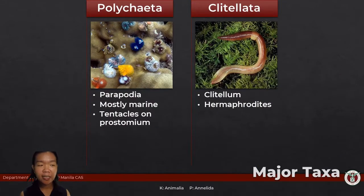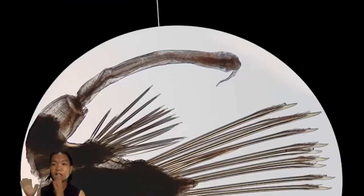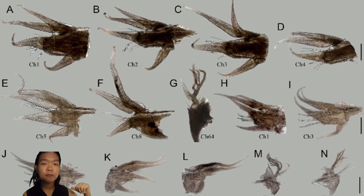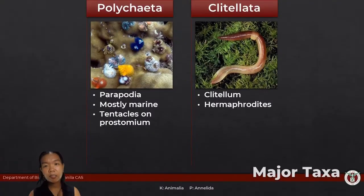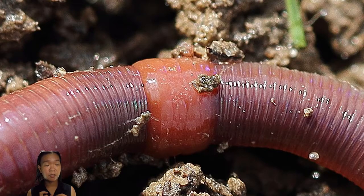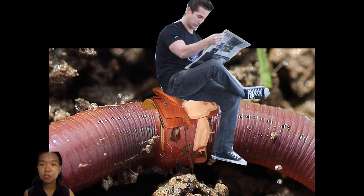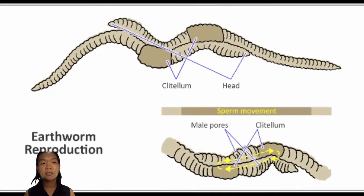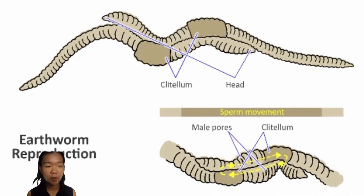From the name 'poly' meaning many, and 'chaeta' meaning setae — polychaetes have a lot of setae, usually situated on lateral extensions of their body called parapodia, with tufts of setae at the ends. The parapodia of polychaetes are fairly diverse and can be used as a basis for identification. Clitellata is distinguished by the presence of a clitellum — from 'clitellus' meaning saddle — a structure along the body that looks like a saddle, and has a reproductive function.